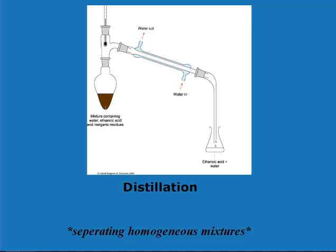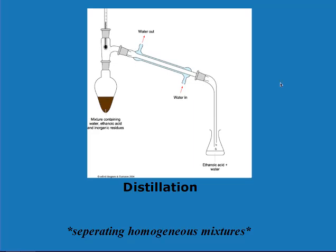Distillation is used to separate a homogeneous mixture based on its boiling point. You have your homogeneous mixture — it starts to boil, the gas goes up and through a tube. This tube has water around it, which cools the tube and turns the gas into a liquid by condensation. That liquid — representing one boiling point's substance — goes into an Erlenmeyer flask. The next boiling point occurs and the next substance starts coming out, and you can switch the Erlenmeyer flask on the right.